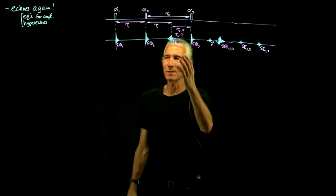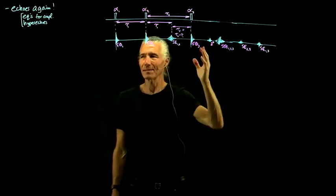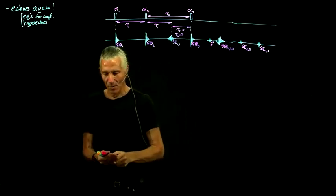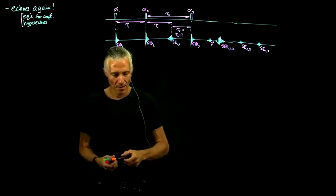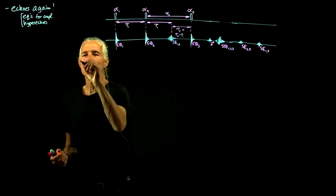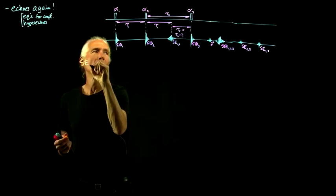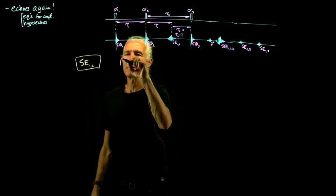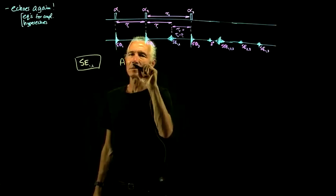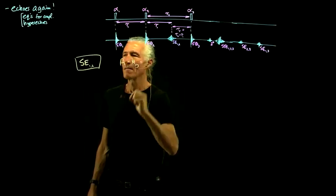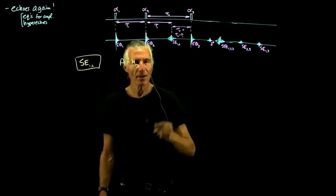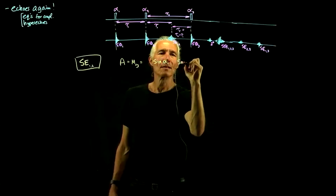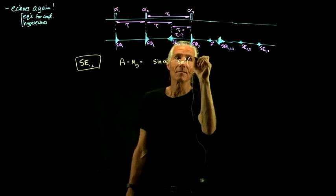You can see that if you did a thousand RF pulses in a row it would be a rat's nest of echoes on top of each other. But if we leave it at three and go over our equations: the spin echo from pulses one and two — the general equation for the amplitude, M-xy at the peak, is sine of alpha-one times sine-squared of alpha-two over two.